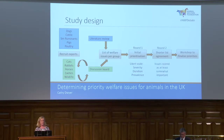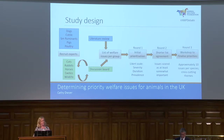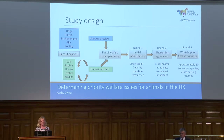In the second round, that shorter list went back to our experts, and they reviewed it again — looking at how successful it had been, whether they agreed or disagreed, and whether those issues should go up or down the list. In the final round, we lost anonymity. We had a workshop in Edinburgh where we brought a smaller number of experts together, and their aim was to take that shorter list and bring it down to approximately 10 issues per species group, with more debate and discussion around each issue.